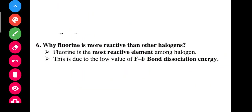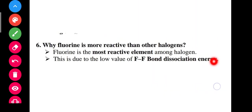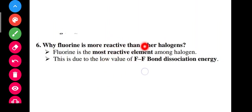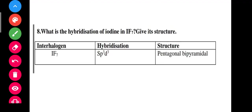Next: why is fluorine the most reactive element? It is due to the low value of the F-F bond dissociation energy. Because of this low bond dissociation energy value, fluorine is more reactive than other halogens.